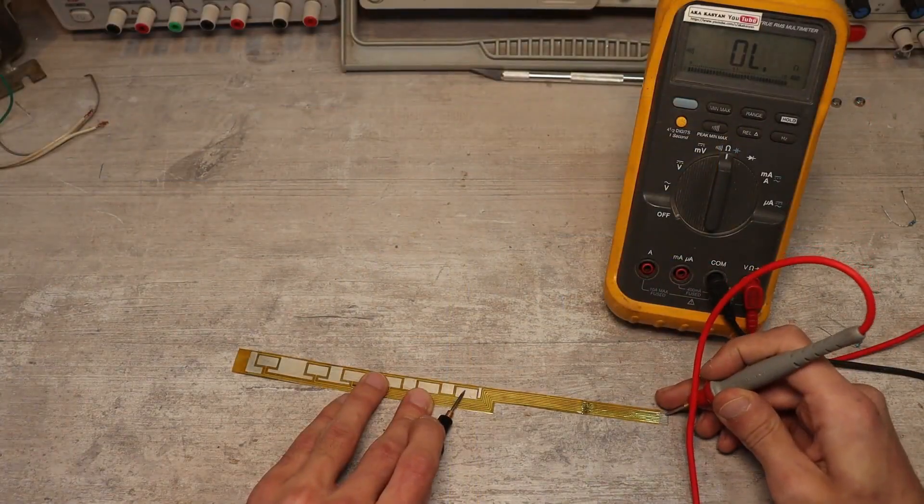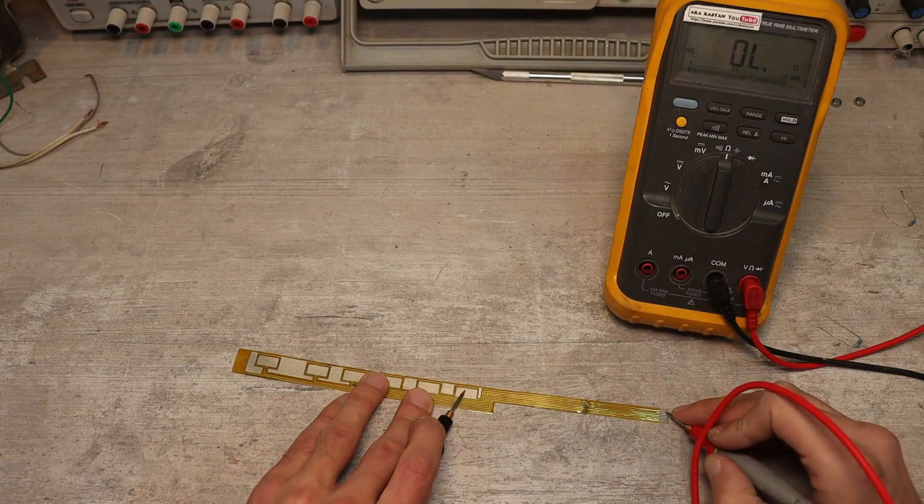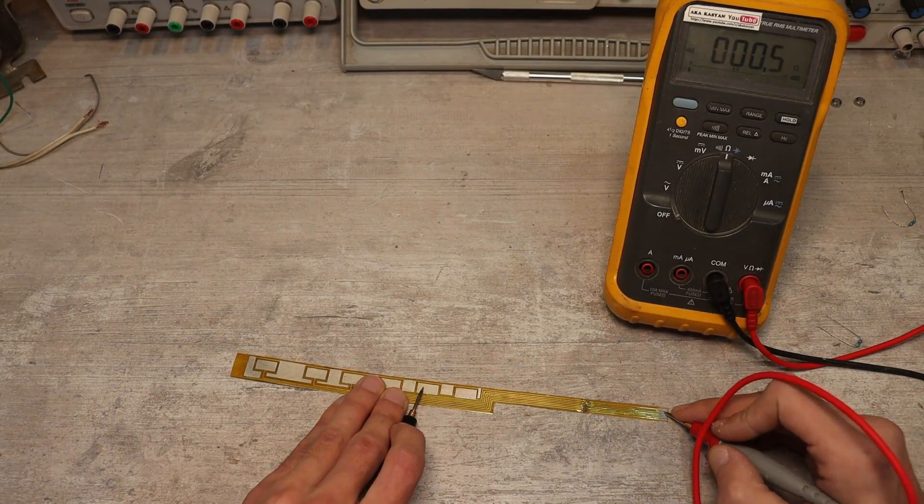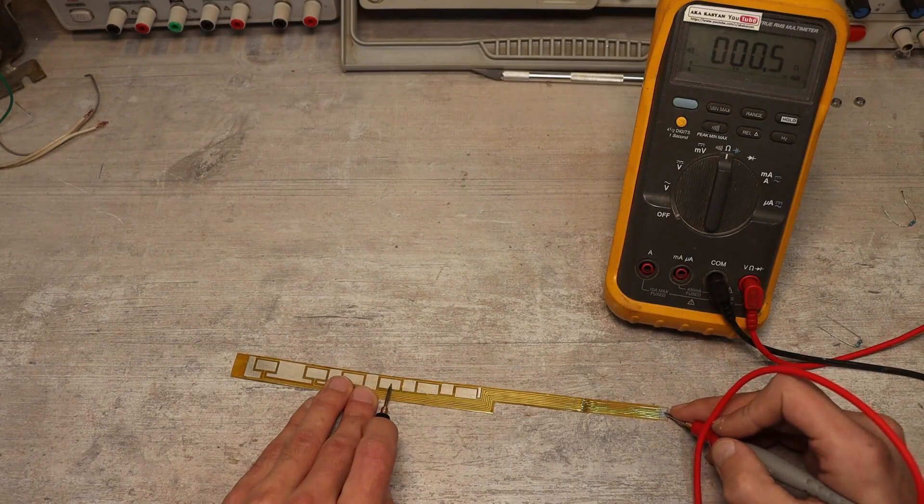And now for the final stretch. Carefully check the board with a multimeter for shorts and breaks. If everything is good, hand the finished cable to the owner.